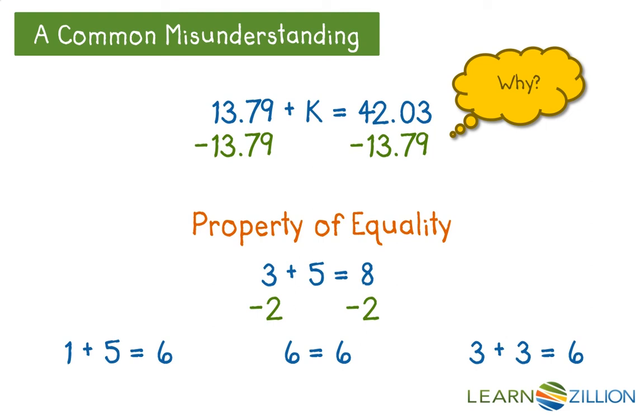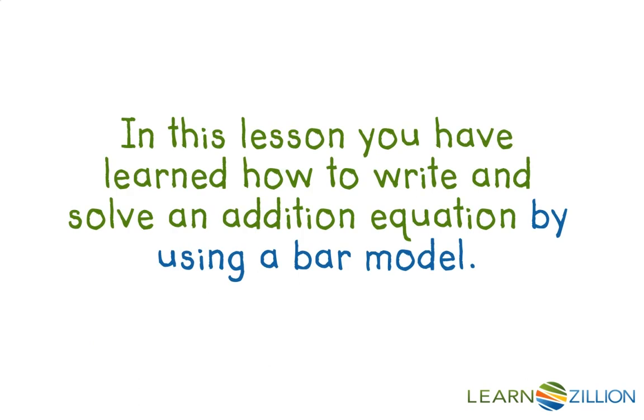So looking at our original equation, I know that I must subtract 13.79 from both sides in order for the equation to remain equal. In this lesson, you have learned how to write and solve an addition equation by using a bar model.